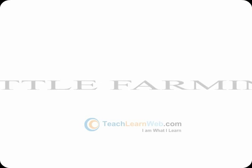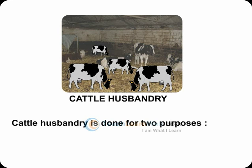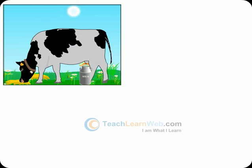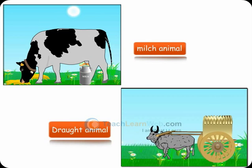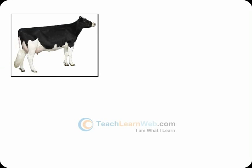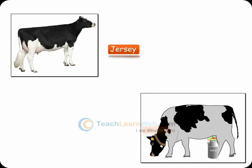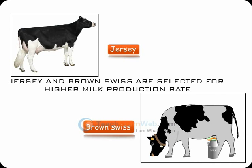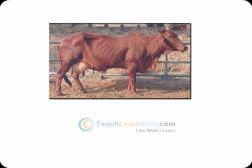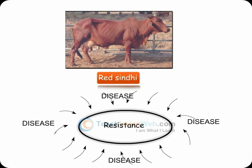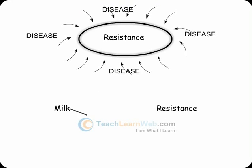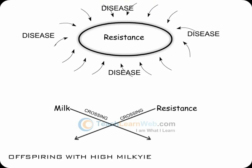Cattle husbandry is done for two purposes: milk and drought labour. Milk-producing animals are called milch animals, while those used for farm labour are called drought animals. Foreign breeds like Jersey and Browns are selected for higher milk production. Local breeds like Red Sindhi show excellent resistance to diseases. Both can be crossed to produce a new variety with desired qualities.